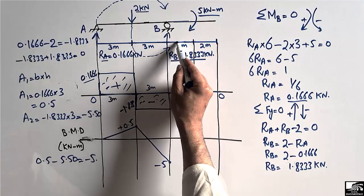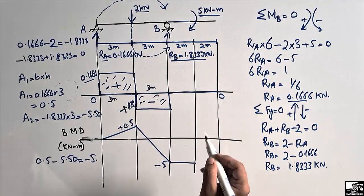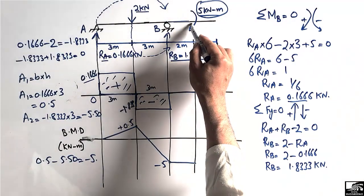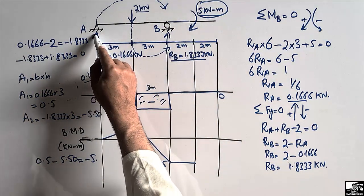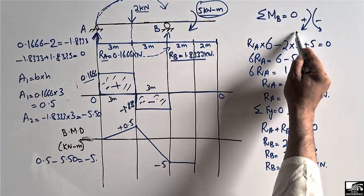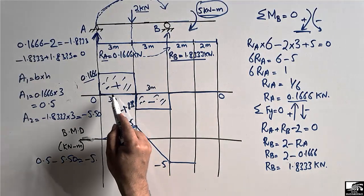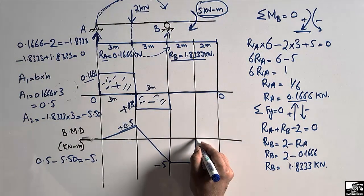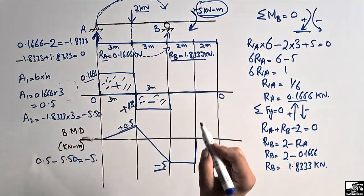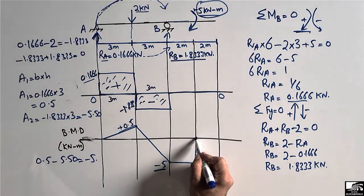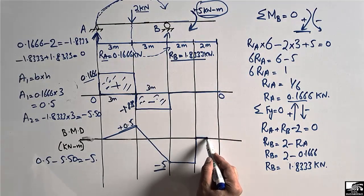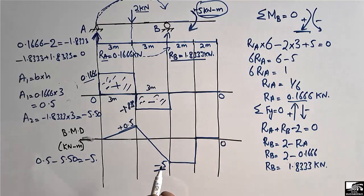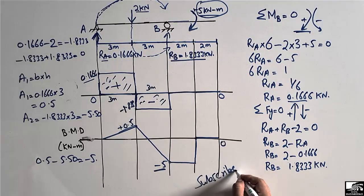From support B up to 2 meters there is no shear force, so the bending moment is a straight line at minus 5. Then there is an applied moment of positive 5 kNm acting in the clockwise direction, which adds plus 5, canceling the minus 5 to give zero bending moment at that point. Beyond that, there is no shear force so the bending moment remains zero. This is the complete shear force and bending moment diagram for this beam. Hope you guys understand — don't forget to subscribe to our channel for daily civil engineering videos.